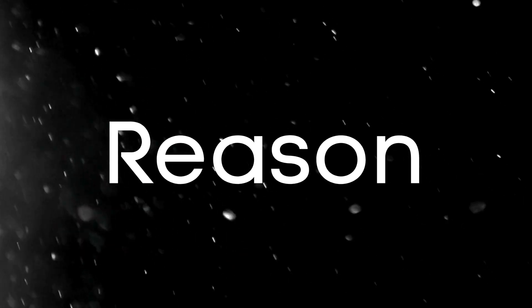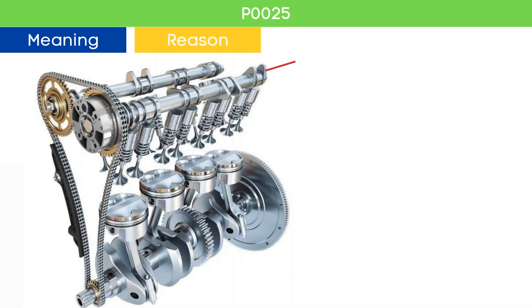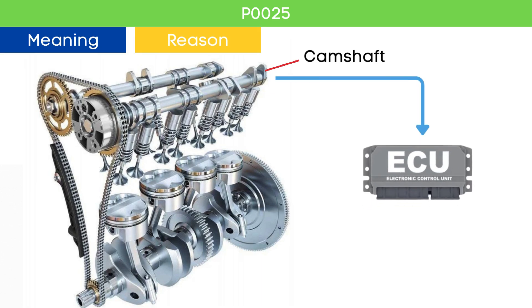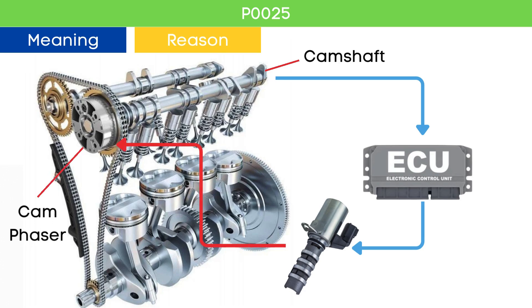Now let's learn why P0025 was triggered. The camshaft position sensor measures the position of the camshaft and sends this signal to the ECU. The ECU then sends a pulse command to the variable valve timing (VVT) solenoid to advance or delay the cam position based on the engine load and speed. The VVT solenoid adjusts the cam phaser accordingly.